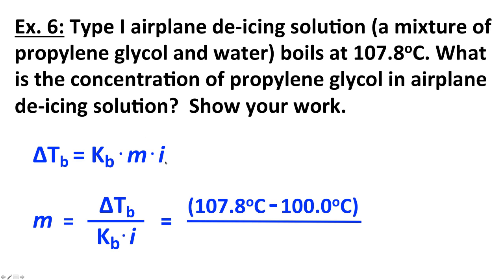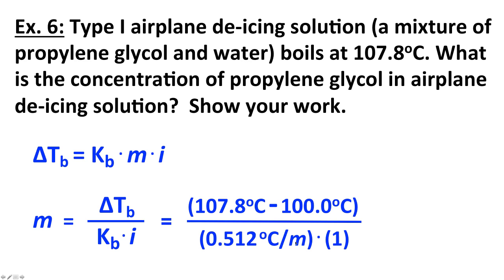Delta T is 107.8°C minus 100°C. K sub B is 0.512 degrees Celsius per molal. Since propylene glycol is a molecular compound that doesn't dissociate into ions, i equals one. The degrees Celsius cancel, and the result is 15 molal for the concentration of propylene glycol in this airplane de-icing solution.